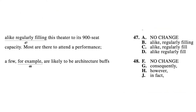Let's take a look at another one — question 48 from the same test. We have: F is "for example", G is "consequentially", H is "however", and J is "in fact". "For example" — affirmative. "Consequentially" — also seems pretty affirmative. "However" — contradictory. "In fact" — affirmative. So we're left with H. We didn't even read the sentence, but we know H is the correct answer. Let's check — sure enough, H is right.